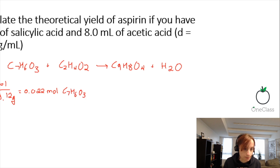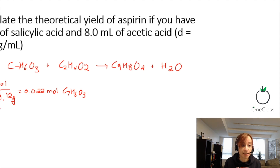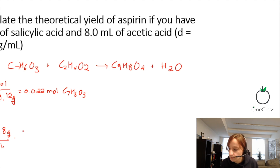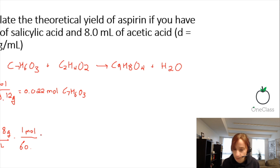For acetic acid, we need an extra calculation because the amount was given in milliliters. We started with 8 milliliters. Using the density: 8 mL × 1.08 g/mL to convert to grams, then multiply by 1 mole over 60.05 grams using the molecular weight.